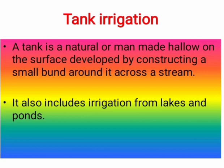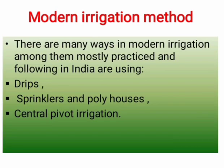Tank irrigation is popular in peninsular India due to some reasons: natural depression, serves as reservoirs, absence of perennial rivers, the scattered nature of population and agriculture fields. There are many ways in modern irrigation; among them mostly practiced in India are using drips, sprinklers and poly houses, and central pivot irrigations.